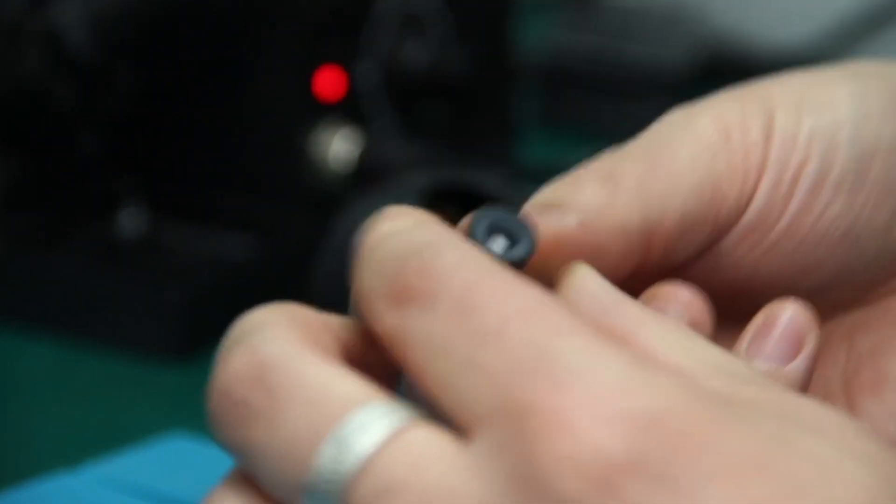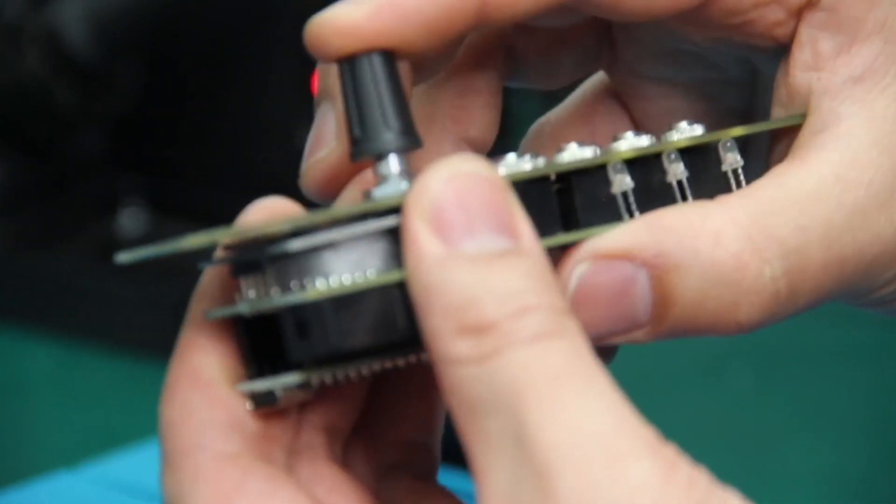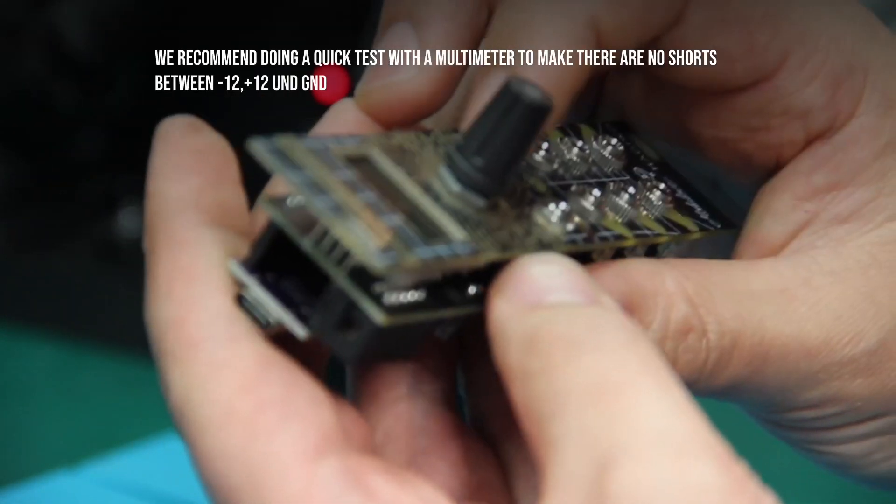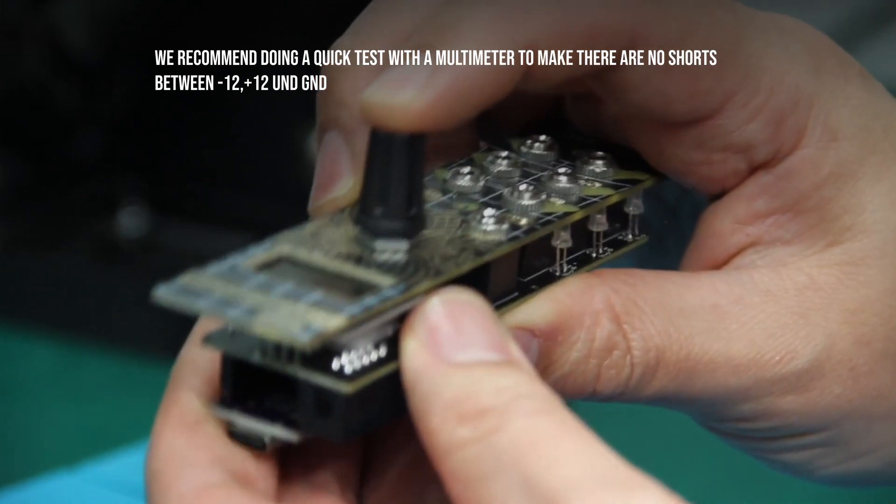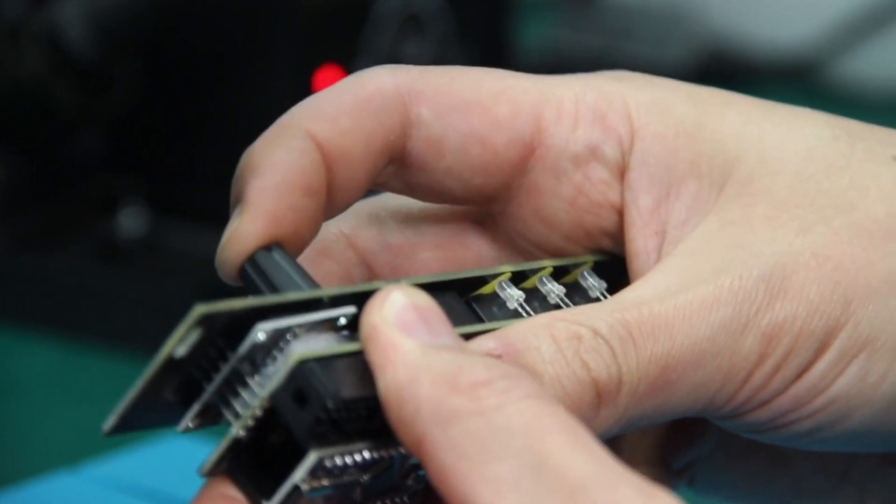With this last step, the build process is complete and you should have a fully functioning arithmetic. We recommend doing a quick test to make sure that there is no shorts between ground, negative 12 volts and positive 12 volts. This is easily done using a multimeter and checking for continuity.